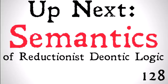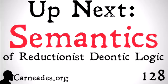Up next, we're going to be looking at the semantics of reductionist deontic logic. We're going to be using the accessibility relationship to understand some of the semantics of reductionist deontic logic. Watch this and more here at carneades.org. Stay tuned for just a few more videos on deontic logic this month. Next month, we're starting on temporal logic and doxastic logic after that. Stay skeptical, everybody.